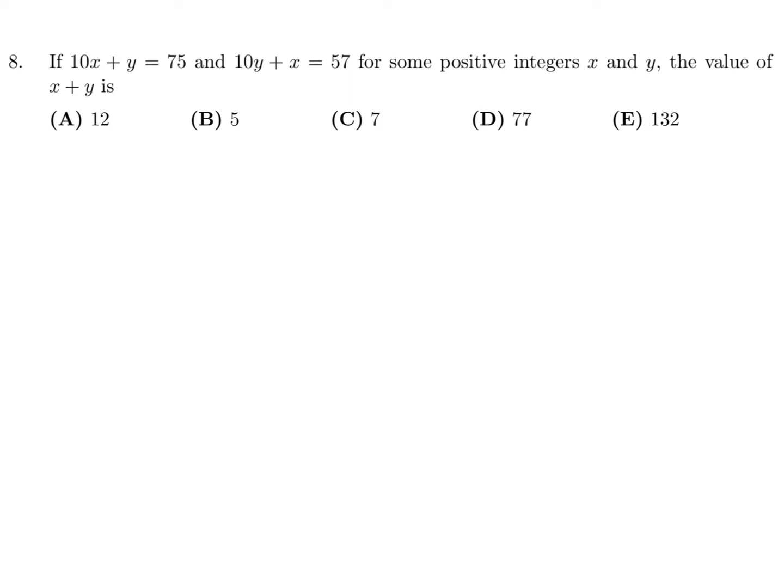If 10x plus y is 75, 10y plus x is 57. For some positive integers x and y, the value of x plus y is. So we've got 10x plus y is 75. And 10y plus x is 57. Well, let's add them. So that will give me 11x plus 11y is 132.